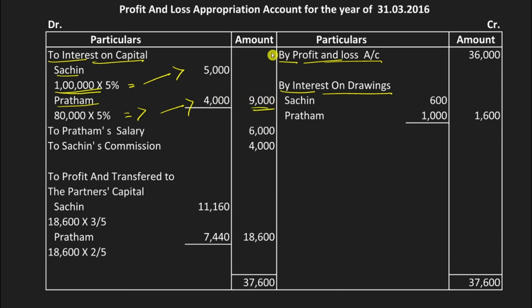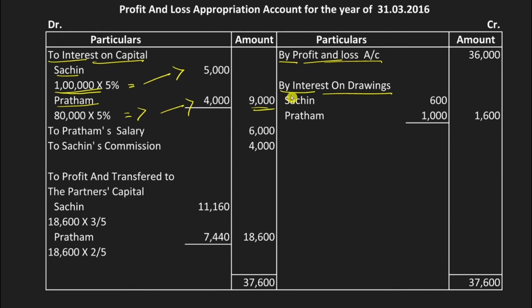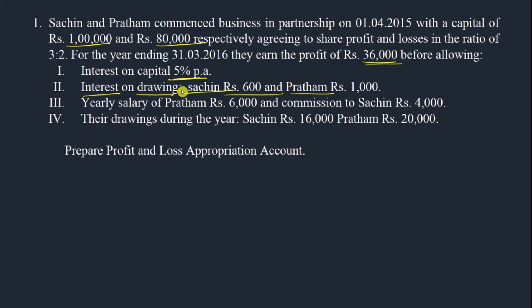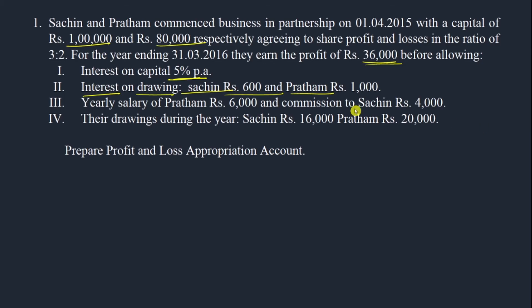Next, interest on drawings is an income for the company, so it is recorded on the credit side. Sachin has to pay 600 rupees and Pratham has to pay 1,000 rupees as interest on drawings. If you total it, you get 1,600 rupees on the credit side.